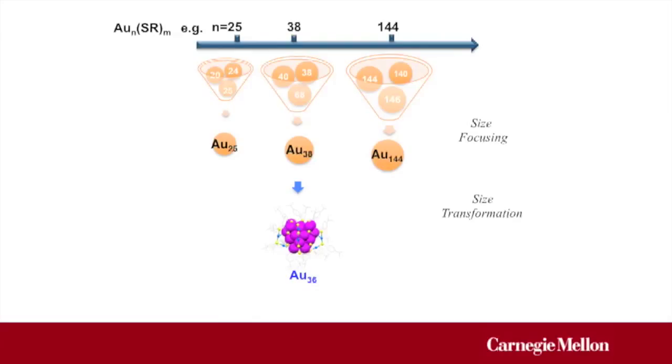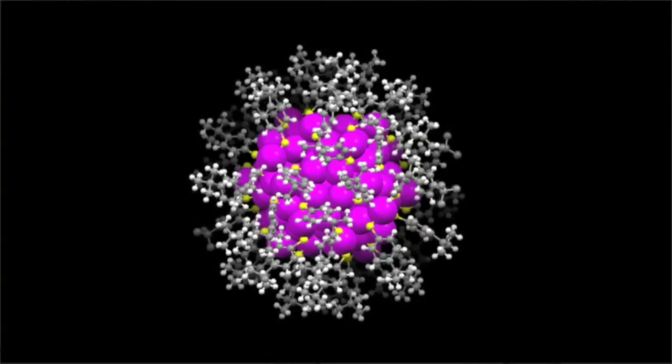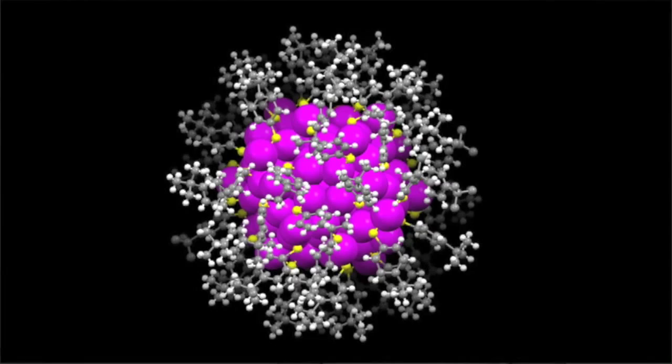The nanoclusters produced by the LEIST reaction give us a great opportunity to study their structural properties. An interesting example is the Au133 nanocluster, which is the largest gold nanostructure identified by X-ray crystallography so far.